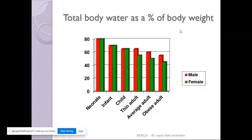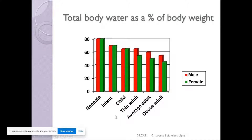Let us look at the physiology first — total body water as a percentage of body weight. In neonates, 80% of body weight is water, and this comes down to the adult percentage by around 18 years of age. Females have a lower percentage of body weight as water, males slightly higher, and the more fat a person has, the lower the percentage of water in the body.